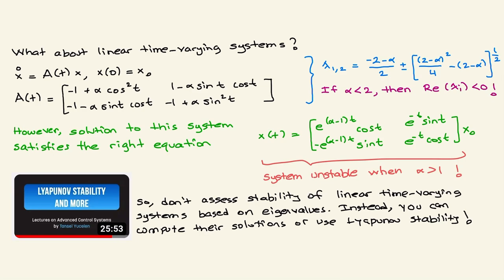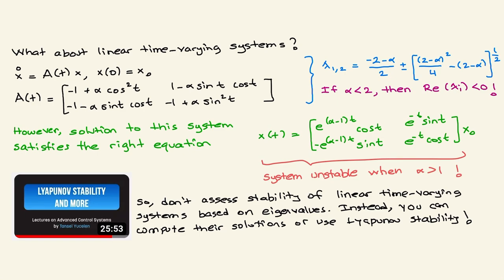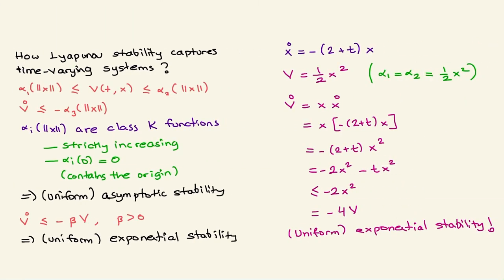There is no eigenvalue-based stability theory for linear time-varying systems. Instead, to assess stability, you can compute their solutions directly, or you can use Lyapunov stability theory, which is the content covered in the preceding video. In fact, Lyapunov stability holds more broadly for nonlinear and time-varying systems.